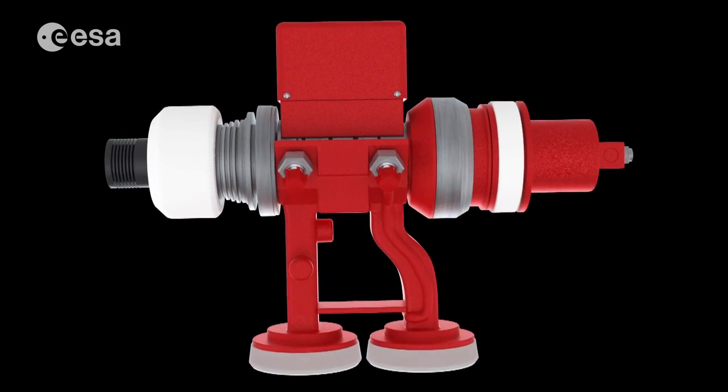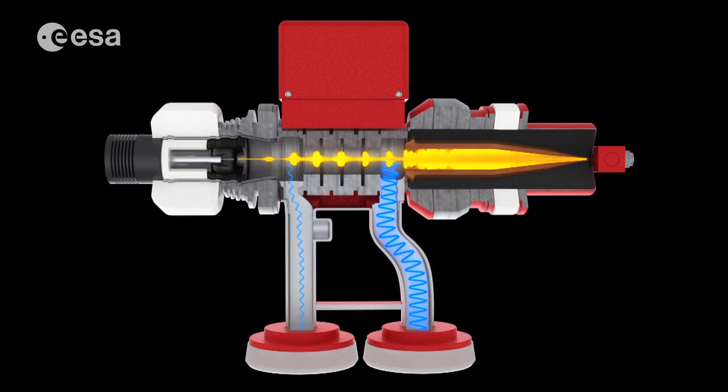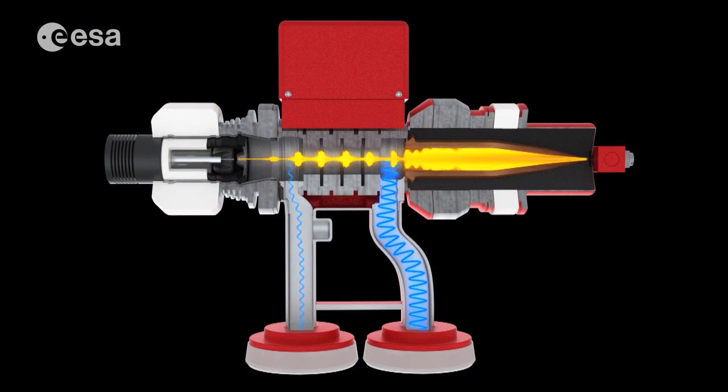The Klystrons amplifies signals by converting the kinetic energy in a DC electron beam into radiofrequency power. The beam is passed through an input cavity resonator and thanks to a phenomenon called bunching of electrons, in turn produces a high-power radiofrequency field in the output cavity.